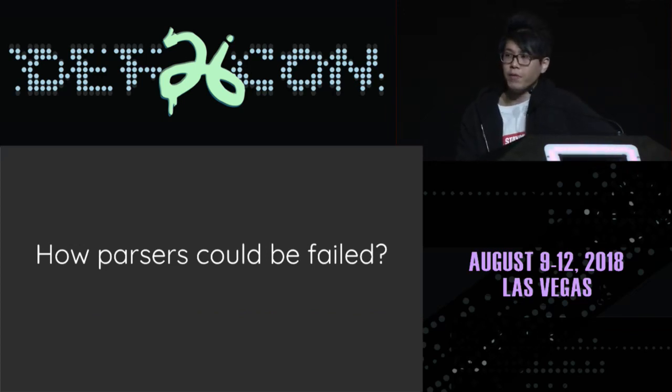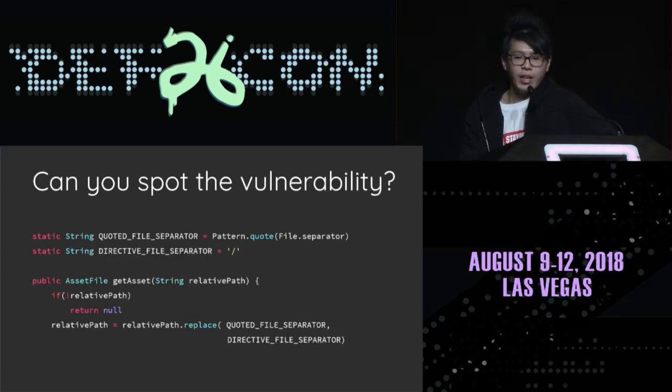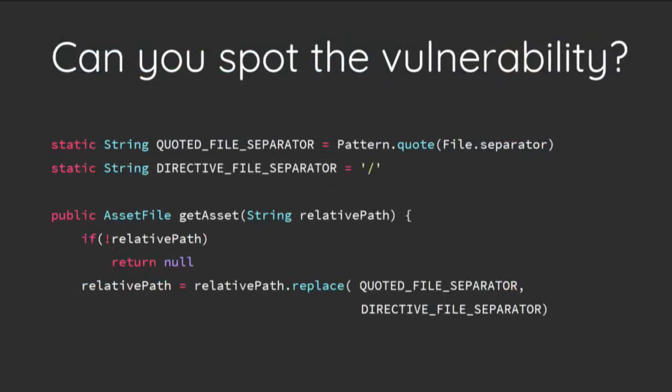First, how parsers could fail. Here is a very obvious programming error — can you spot the bug? This code was copied from Grails, a powerful Groovy-based web application framework. This is part of static file handling where the argument related to the path is attacker-controllable. In order to be compatible with Windows environments, the code replaces the current file separator using a regular expression. So Grails escapes the path by Pattern.quote().